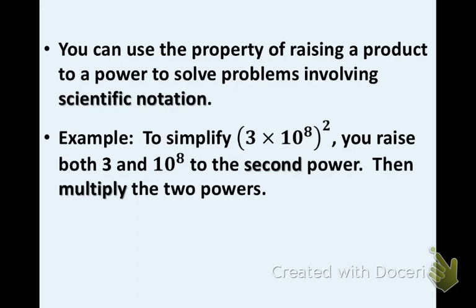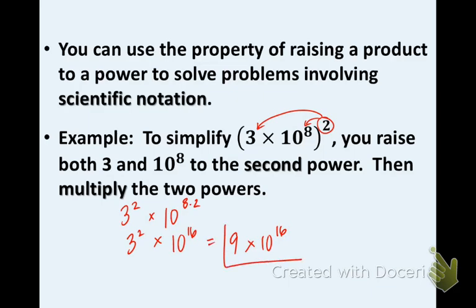Here's an example that I want you to look at. To simplify this expression, 3 times 10 to the eighth all raised to the second, you're going to raise the 3 and the 10 to the eighth to the second power. So like before, what I was just talking about, you share the two with both. So that means we're going to have 3 to the second times 10 to the eighth times 2. 3 to the second and the 10 to the eighth times 2 is 16. 3 to the second is 9 and then the 10 to the 16 stays the same. So this is the simplified version of the original scientific notation. So again, multiply the two powers. Remember that you are sharing that number on the outside with everything on the inside.